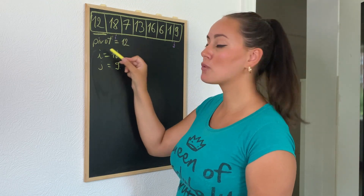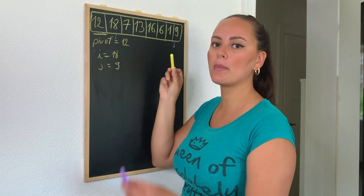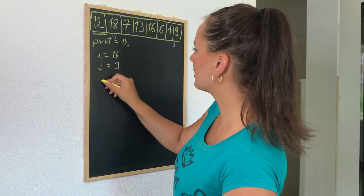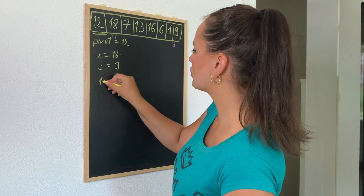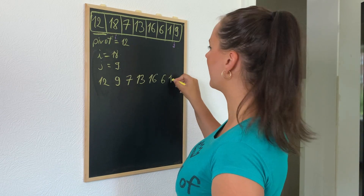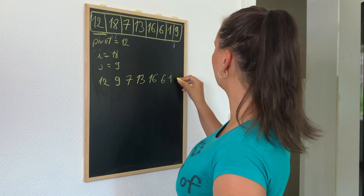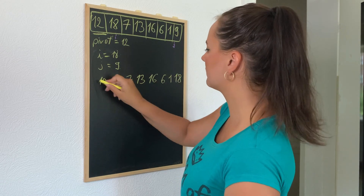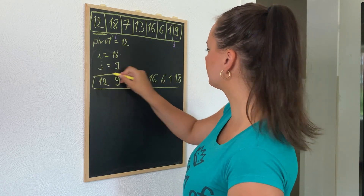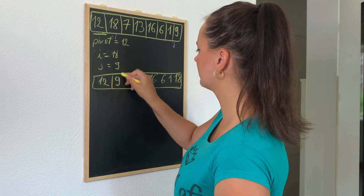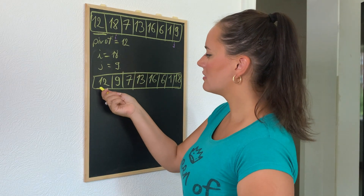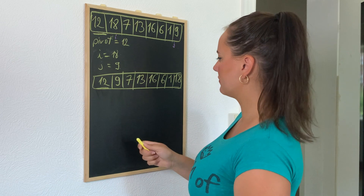i is bigger than our pivot and j is smaller than our pivot, so the swap rule applies and we swap the elements together. The array now looks like: 12, 9, 1, 18. We still have 12 as our pivot.